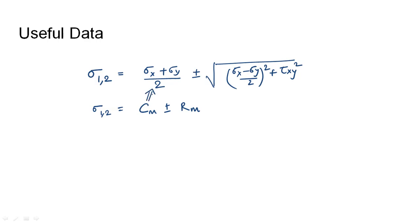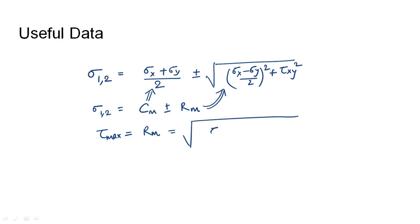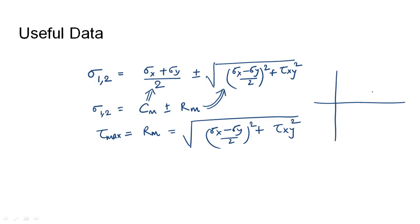The center is located on the x-axis at (sigma x plus sigma y)/2, and the radius of the Mohr circle is the square root of ((sigma x minus sigma y)/2)² plus tau_xy². Therefore, the maximum shear stress equals the radius of the Mohr circle. The center lies at (sigma x + sigma y)/2 and is extended by plus and minus r, giving the two principal stresses.